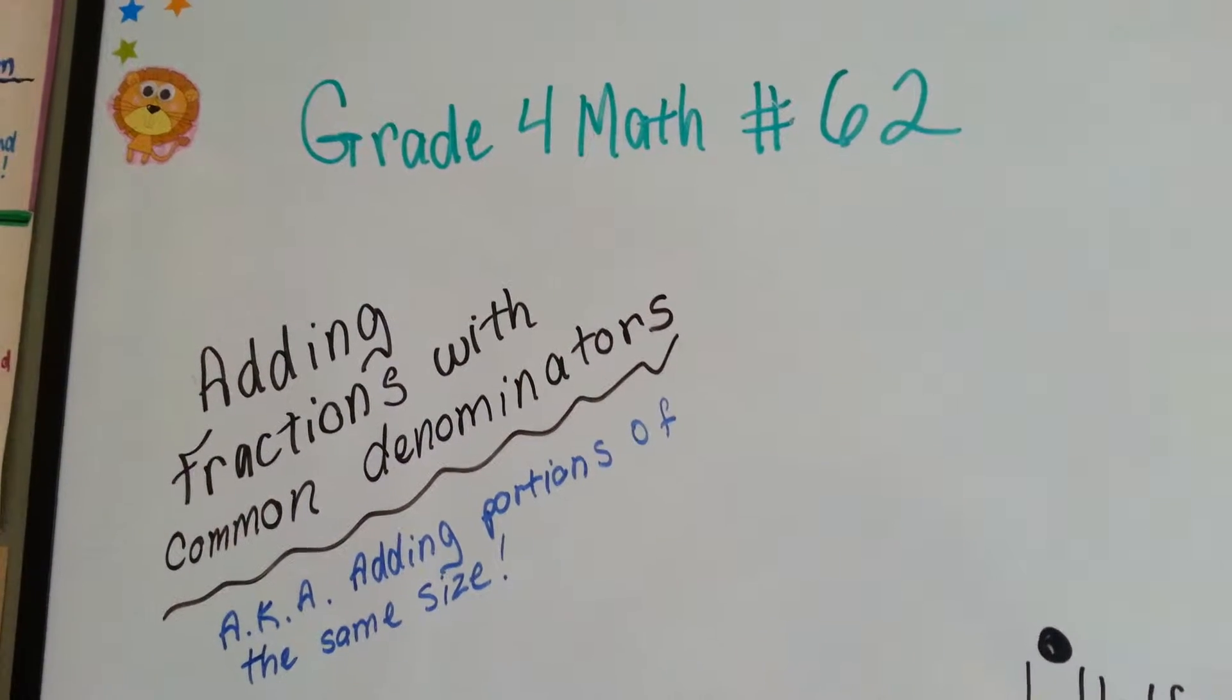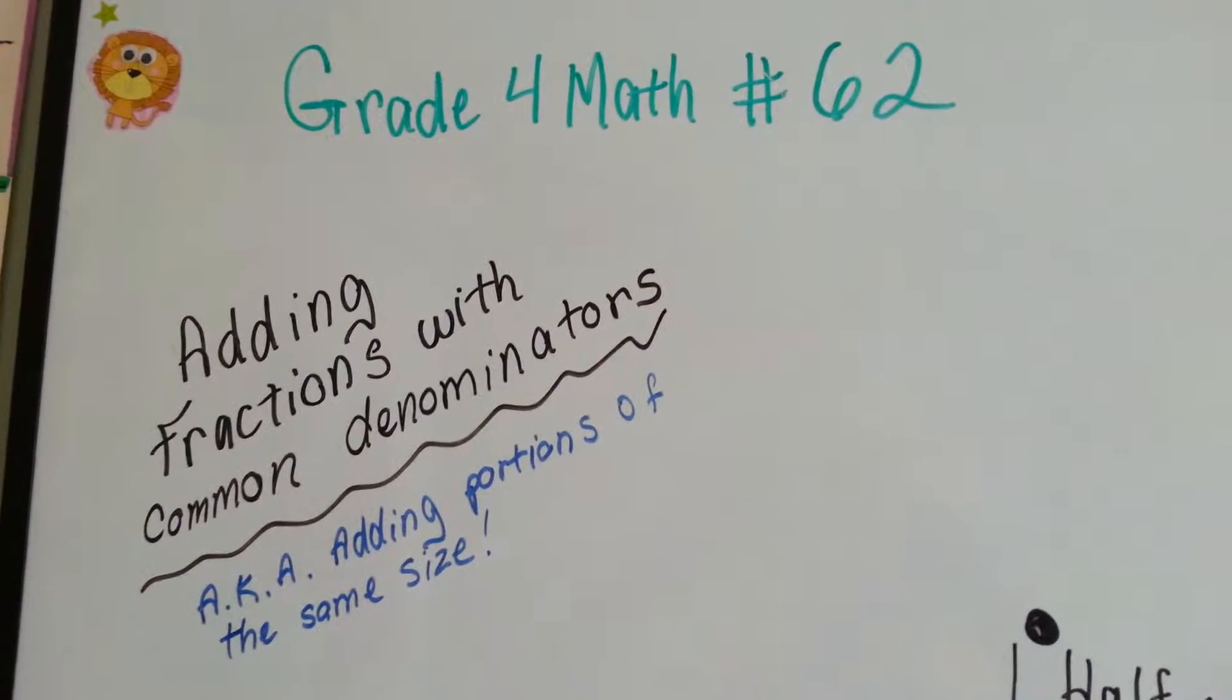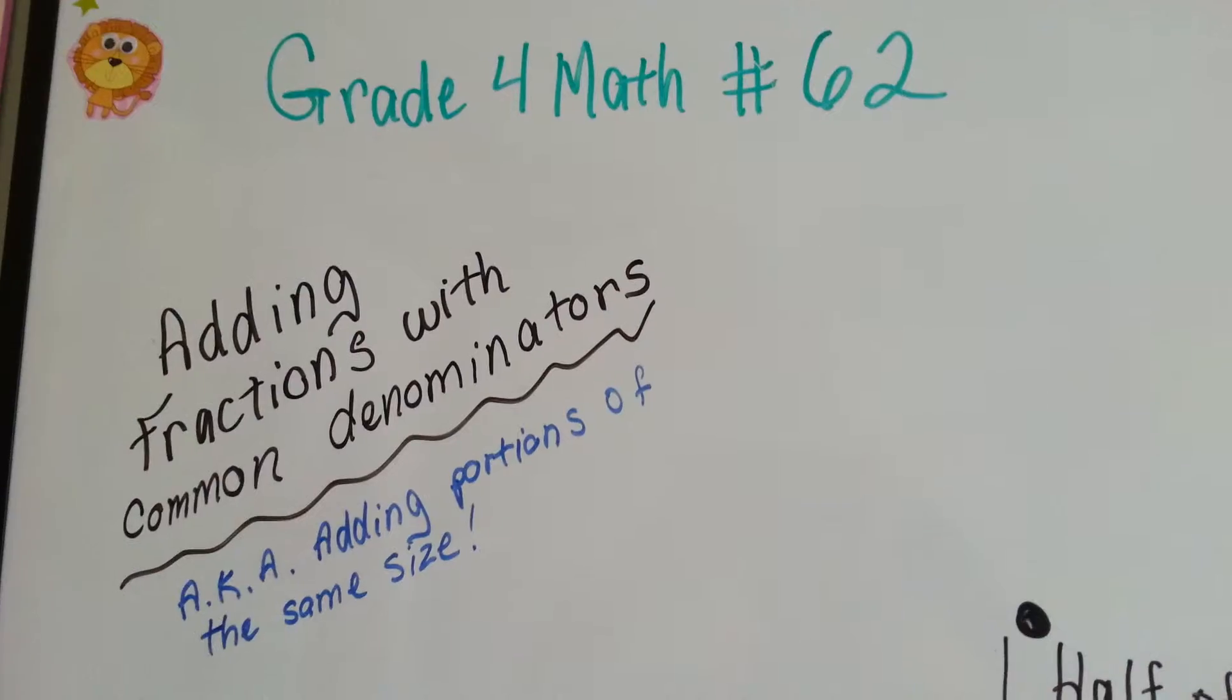Grade 4 math number 62, adding fractions with common denominators, also known as adding portions of the same size.